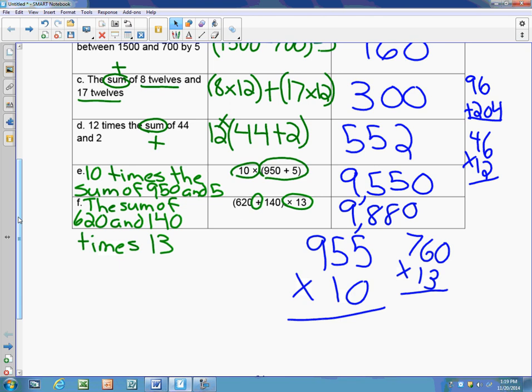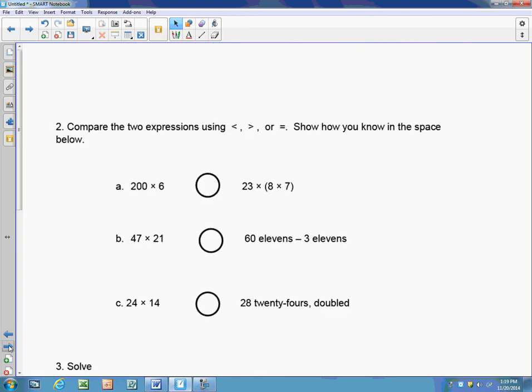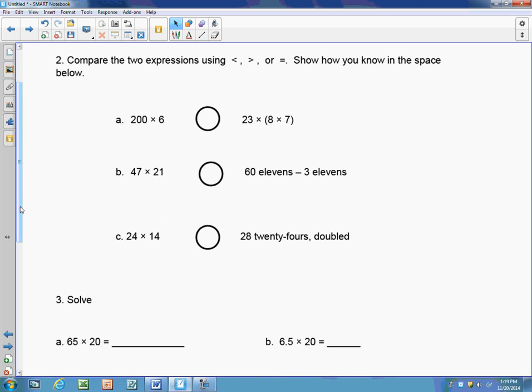The next thing I need to do is question 2, which wants me to compare the two expressions using less than, greater than, or equal to, and show how you know. So I have to have some work. This would be 1,200. And then on the right-hand side, first thing I need to do is solve the parentheses. Then I have to figure out 23 times 56, and that's 1,288. So when I look at those two numbers, I know that 200 times 6 is less than 23 times 8 times 7.